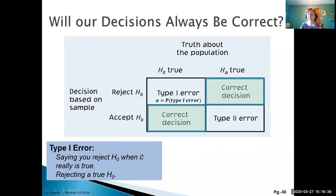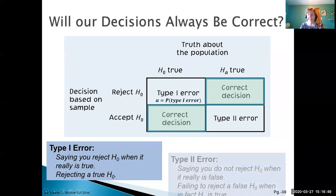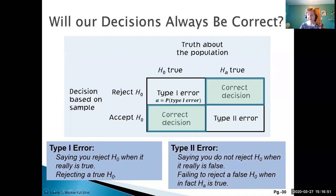The alpha error is when we reject the null hypothesis when it's really true — we rejected a true null hypothesis — and that could have serious consequences or might not, depending on the situation. The other type of error is when we fail to reject a false null hypothesis — we've accepted it, but actually the alternative was true. That is classified as a beta or Type II error.